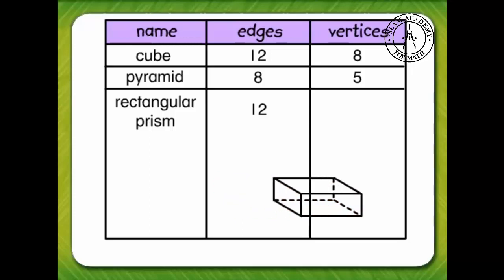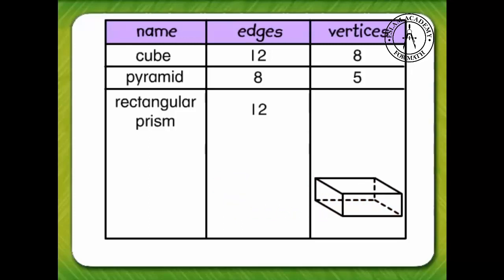How many vertices does a rectangular prism have? 1, 2, 3, 4, 5, 6, 7, 8. A rectangular prism has 8 vertices.